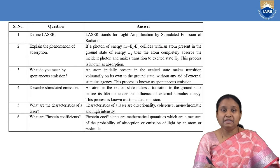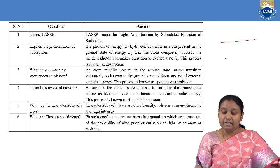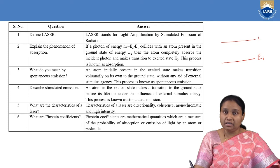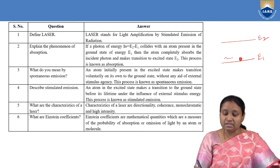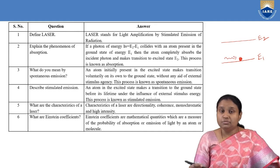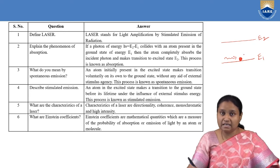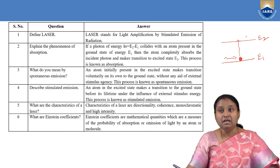Next, explain the phenomenon of absorption. If we take a system of atoms with two active energy levels E1 and E2, the atom will be in the ground state. When we expose it to a photon whose energy equals E2 minus E1, the atom absorbs that energy and goes to the higher state. This phenomenon is called absorption.